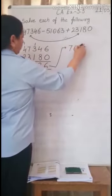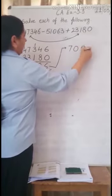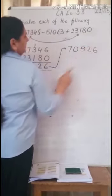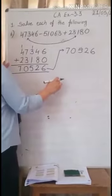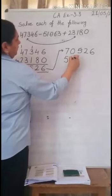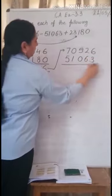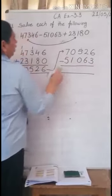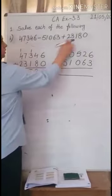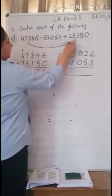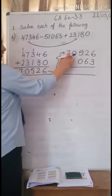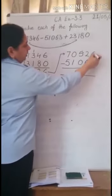Now we will write the sum here: 70,526. We will subtract 51,063 from the sum of these two numbers. I have written here. Now we will do subtraction.